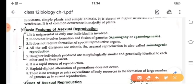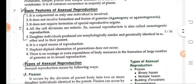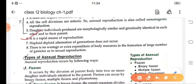What are the basic features or characteristics of asexual reproductions? It is uniparental, that means only one individual is required and it does not involve any formation and fusion of gametes. It also does not require formation of special reproductive organ. In asexual reproduction, any part of an organism can reproduce. All the cell division in asexual reproduction, they are mitotic, so they are also known as somatogenic reproduction. The daughter individuals, they are identical to each other and they are said to be cloned. It is a rapid or a fast means of reproduction. Haploid, diploid alternation of generation does not occur in this asexual reproduction. And there is also no wastage or extra expenditure on the body resources.